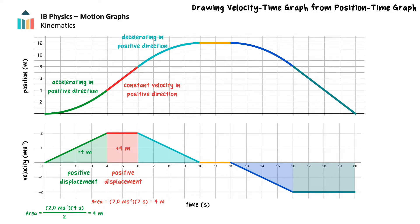In the next 4 seconds of motion, the object decelerates in a positive direction. From the position-time graph, we can see that the object's displacement in this segment is positive 4 meters. On the velocity-time graph, the area bounded by the graph is above the time axis because the displacement is positive. The area of this triangle is 4 meters.